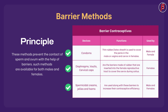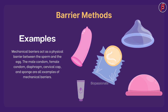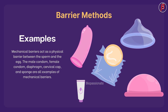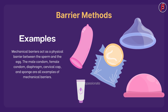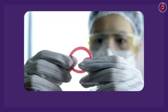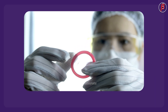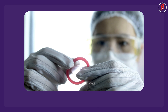Spermicidal creams, jellies, and foams are used along with these barriers to increase their contraceptive efficiency. Mechanical barriers act as a physical barrier between the sperm and the egg. The male condom, female condom, diaphragm, cervical cap, and sponge are all examples of mechanical barriers.